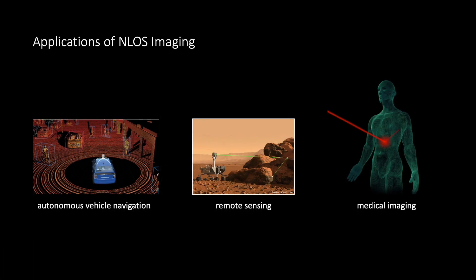Non-line-of-sight imaging, or imaging around the corner, is an emerging technology with potential applications for self-driving cars, remote sensing, and medical imaging to name just a few.